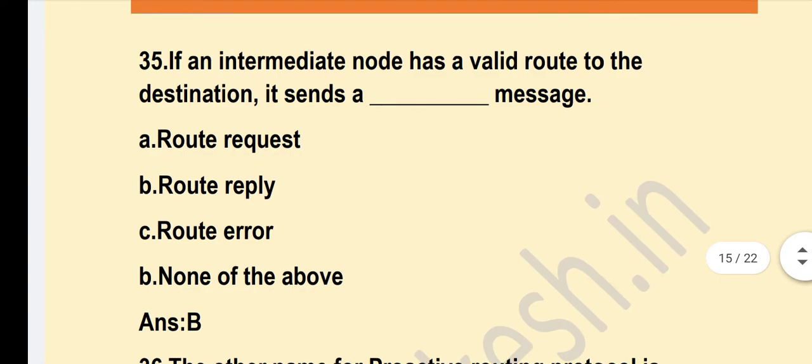If an intermediate node has a valid route to the destination, it sends a blank message. Option B — Route Reply — is the correct answer.